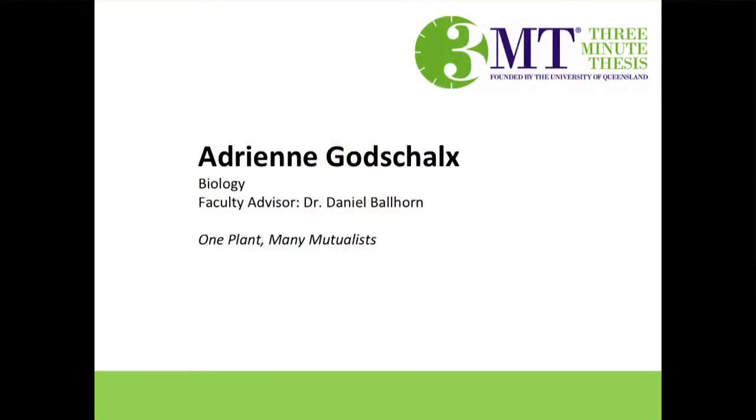Plants interact with many organisms at one time. Many of them are beneficial — we call these mutualists. Mutualists, such as pollinators, plant protectors, or organisms that help plants acquire nutrients, all interact with some of the same plants at the same time. These multiple interactions are important to consider in a world where many of our energy, nutrient, and food security solutions depend on plants.